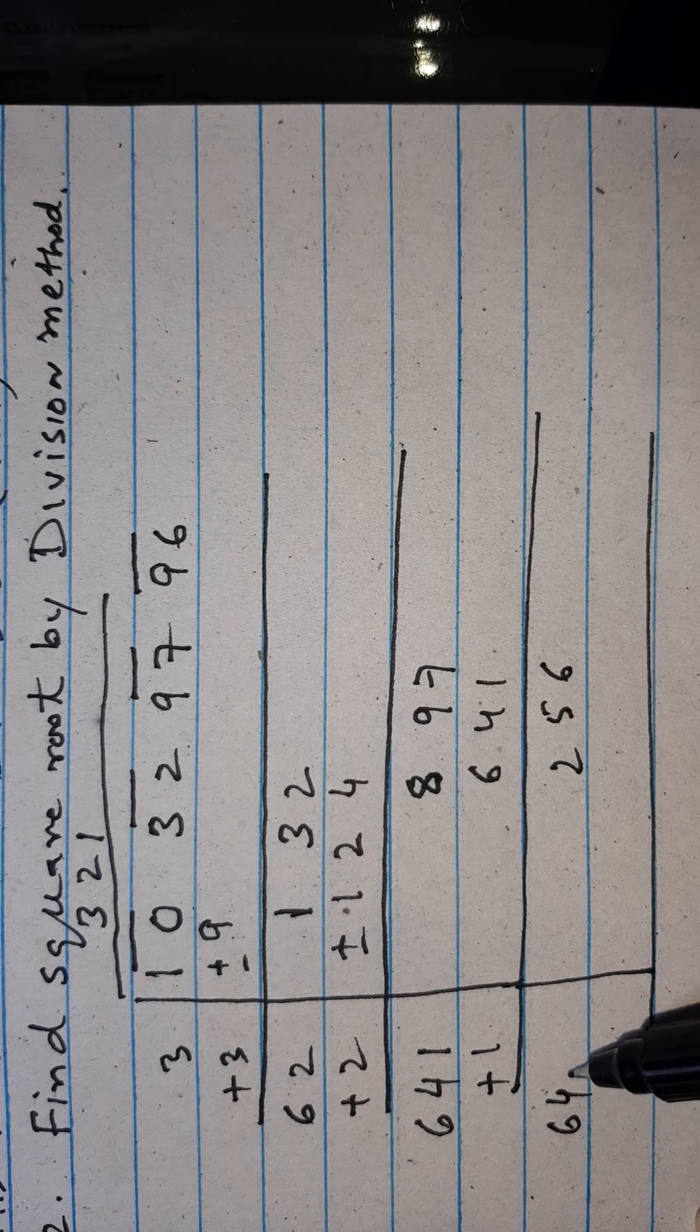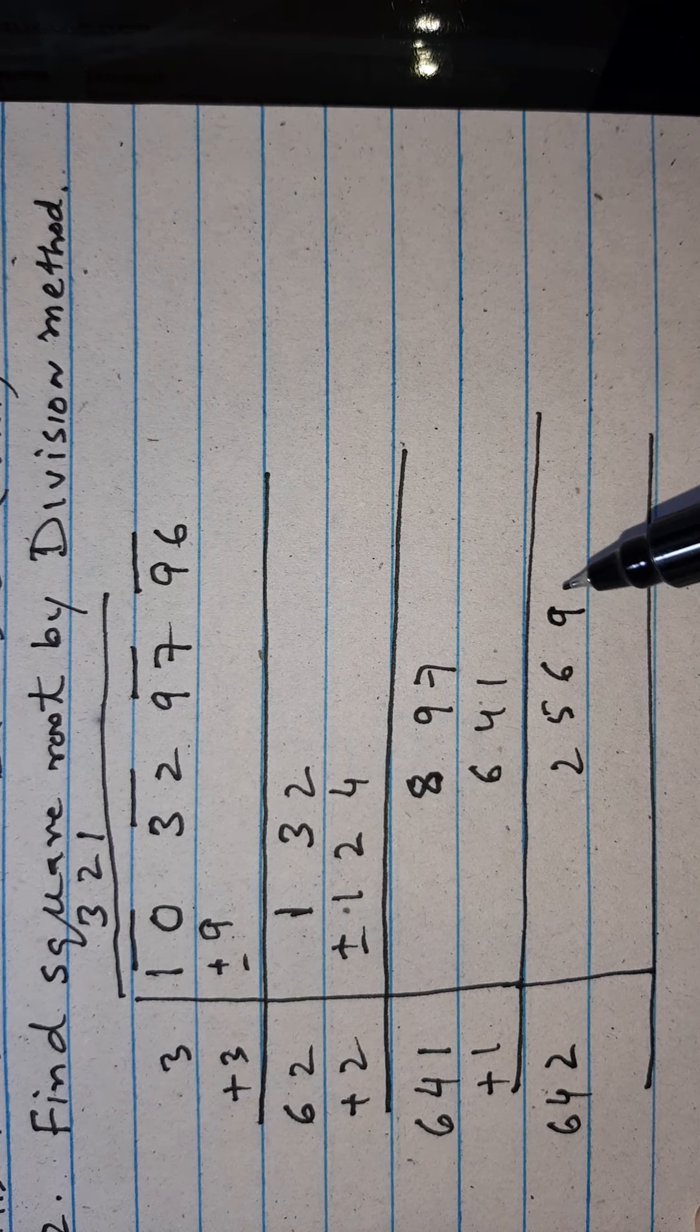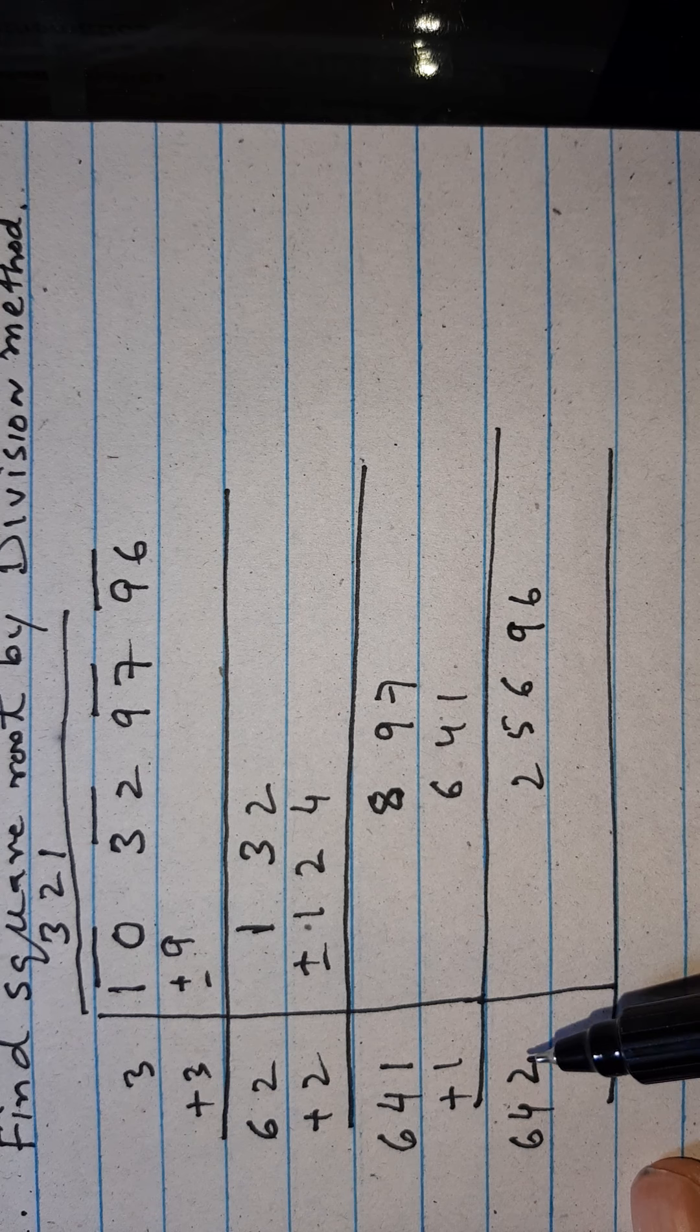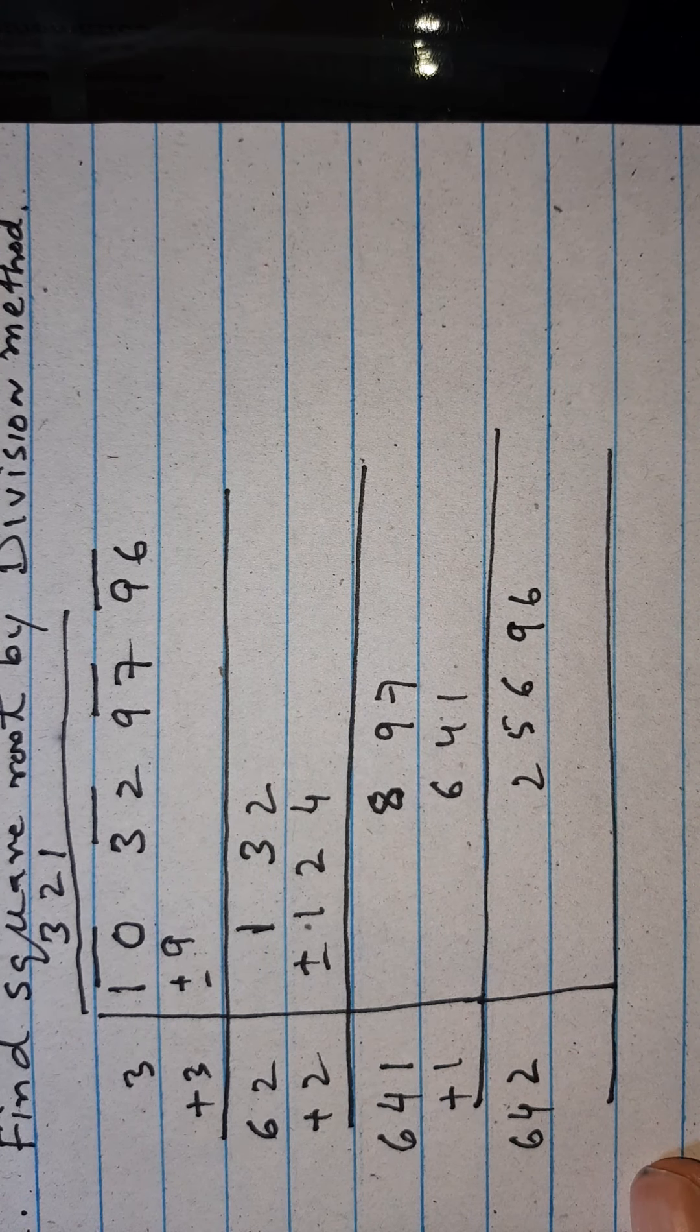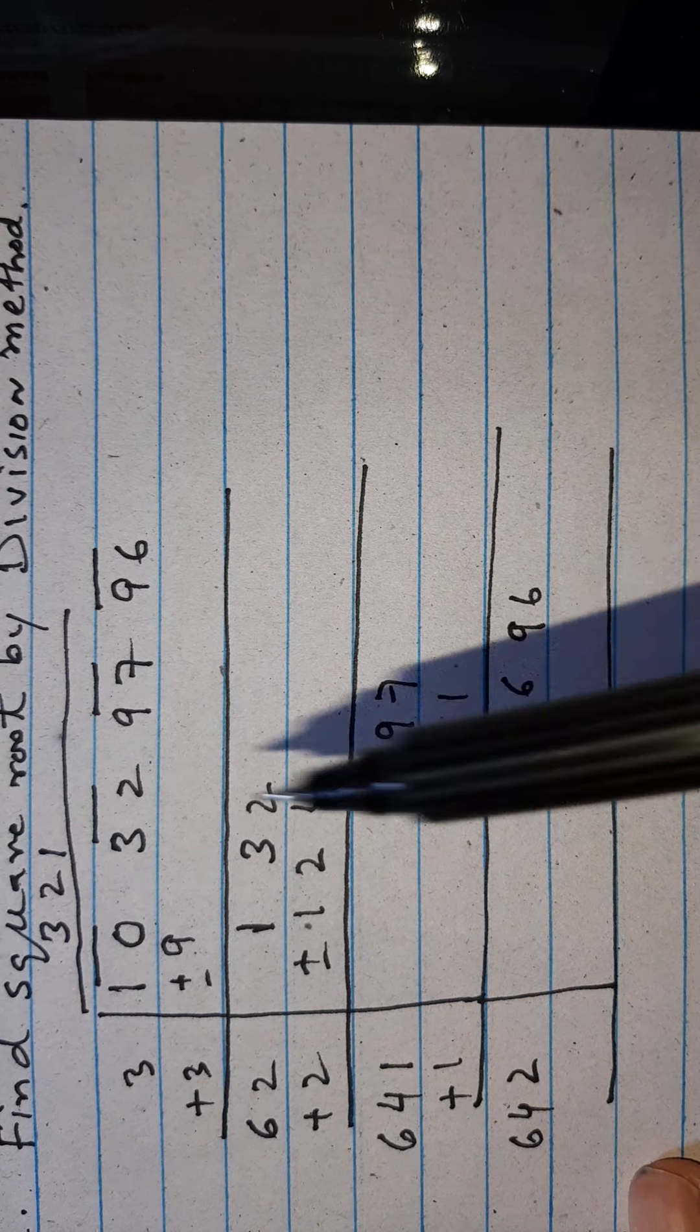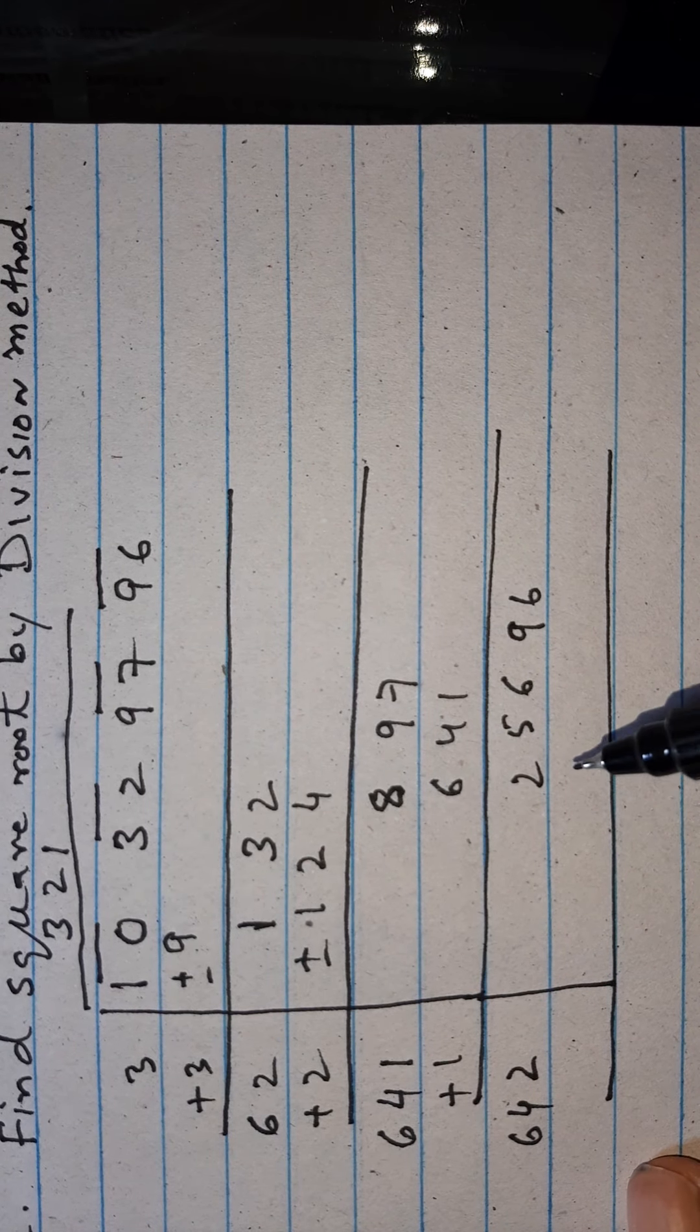This becomes 642, and this pair we can write here. Now there are two possibilities. If we write here 4, then we can get 16, 4 times 16. Or if we write 6, 6 times 36 is also a possibility. But when we multiply by 6 here, we get 36. Here we have only 25.